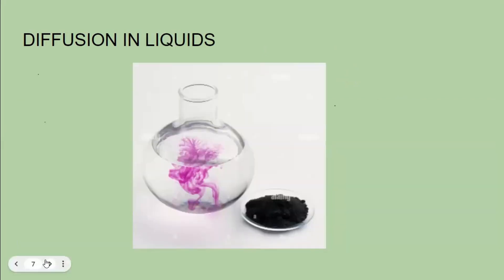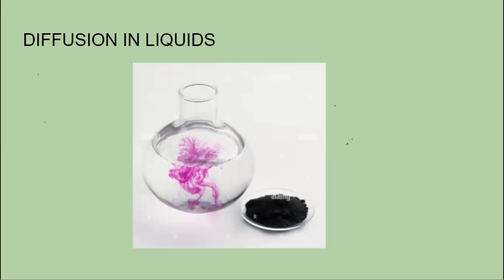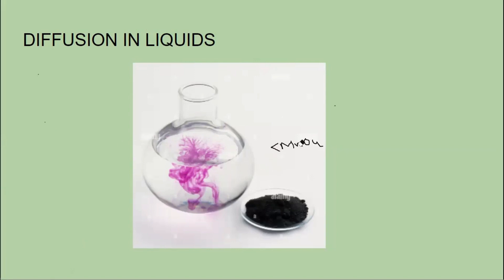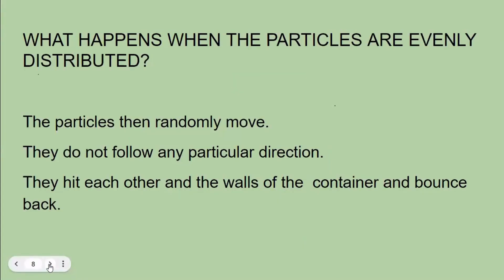Now let's see how diffusion takes place in liquids. We have a chemical compound called potassium permanganate, formula KMnO4. We drop a few crystals of potassium permanganate into a container of water and observe how it diffuses all around. Eventually the entire water will become pink in color, but it will take some time — it is not instantaneous. You can see it moving from the area of higher concentration to lower concentration. Once evenly distributed, particles then move in a random zigzag haphazard way — Brownian motion.